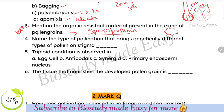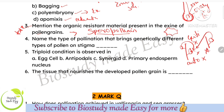Name the type of pollination that brings genetically different types of pollen on the stigma. Autogamy is within the same flower; geitonogamy is between different flowers of the same plant; and genetically different pollen from a different plant — that is xenogamy. Xenogamy is very very important. Remember: autogamy, geitonogamy, xenogamy — don't confuse them.